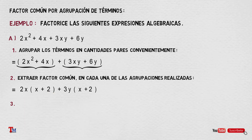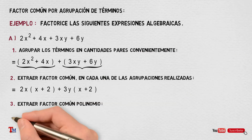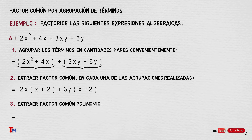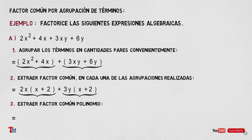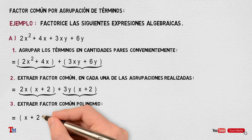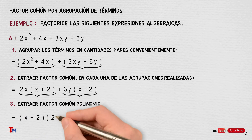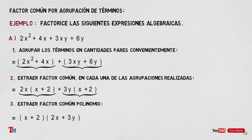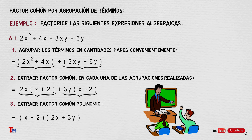Paso número 3: Extraer factor común polinomio. No vamos a explicar en este video el proceso para extraer el factor común polinomio, pero si tienes alguna duda te dejaré el link en la descripción del video. El máximo común divisor entre ambos términos sería x más 2, que multiplica a 2x más 3y. Espero que vayas entendiendo el tema.